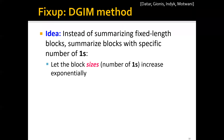In this part of the lecture, we'll talk about how to fix the issue of unbounded error and develop the full version of the DGIM algorithm. The idea is that instead of summarizing fixed-length blocks, this time we'll try to summarize blocks with a specific number of ones. So basically we'll let the block sizes, i.e. the number of ones, increase exponentially.